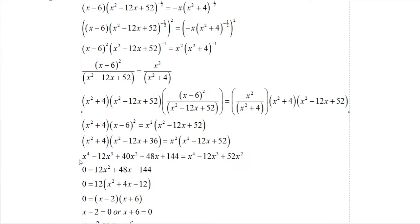Combine all things on one side by subtracting x to the fourth, luckily that cancels, and add 12x cubed to both sides, that cancels. What's left is the x squares, so we get 0 here and 40x squared subtracted from 52x squared is 12x squared. Then we're going to add 48x and subtract 144 to get everything on the right side and 0 on the left. Luckily the x to the fourth and x cubed cancels.